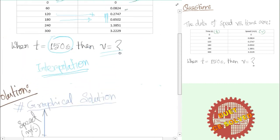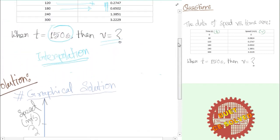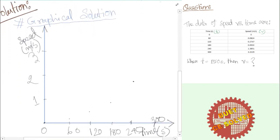At 240 seconds the value is noted, and at around 308 seconds — the speed value is approximately 3.222 nine. So from the graph, at T equals 150 seconds, we read off the interpolated speed value from the plotted graph.